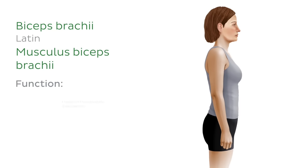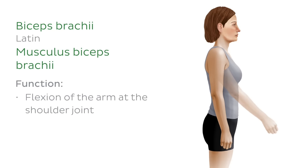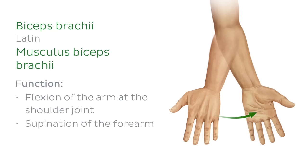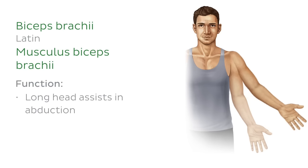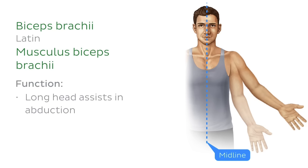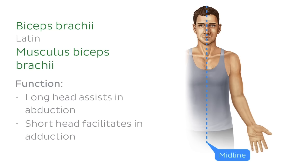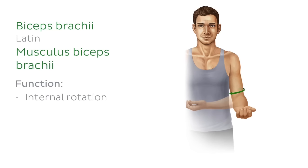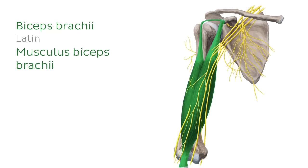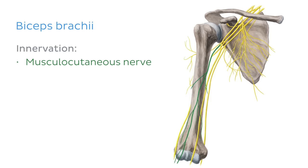The biceps brachii also assists in flexion of the arm at the shoulder joint and supination of the forearm — a movement involving rotation of the hand and forearm so that the palm faces upwards or forwards. The long head assists in abduction of the arm at the shoulder joint, while the short head facilitates adduction. This muscle also assists in internal rotation of the arm at the shoulder joint. The biceps brachii is innervated by the musculocutaneous nerve, which is a branch of the brachial plexus.